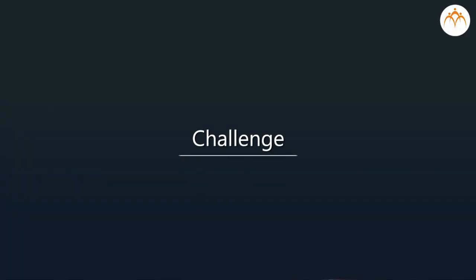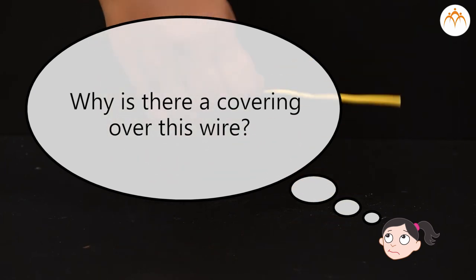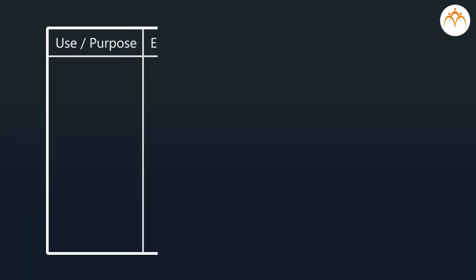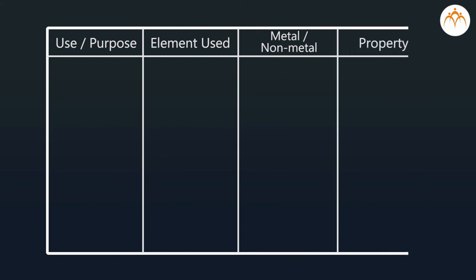Technology challenge: why is there a covering over this wire? Discuss with your friends and try to find out. From your surroundings, make a list of metals and non-metals used for various purposes based on their physical properties in the following format: element, use or purpose, element used, metal or non-metal, property.